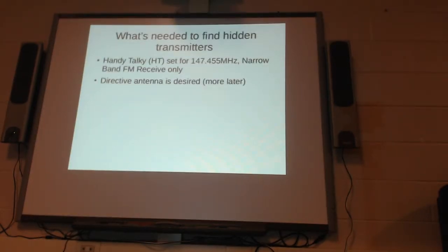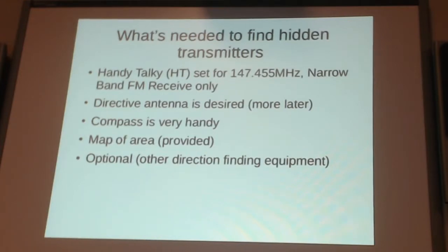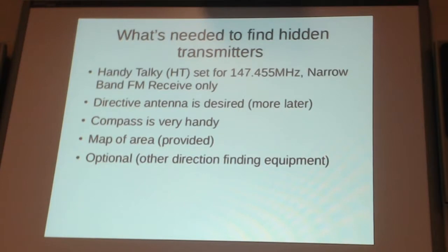You'll need a directive antenna, or a directional antenna, as very much desired. A compass will be very handy when operating out of the park in order to get a bearing that you get from your antenna. You'll need a map of the area, and we'll be providing that. If anybody has any other direction-finding equipment that they'd like to bring to the QRP in the field activity, that would be fine.